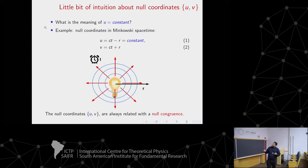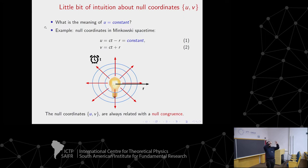Every time we talk about null coordinates, implicitly we are talking about a null congruence that fills the whole spacetime. It also has a very nice geometric property - as you can see in these blue circles. If we take a fixed value of t we get a sphere, and the null rays are orthogonal to that sphere. If we take another value of t, we get a bigger sphere, but again the null rays are orthogonal to that sphere.